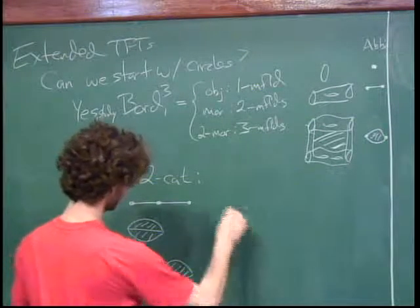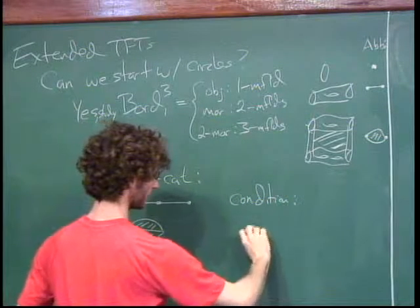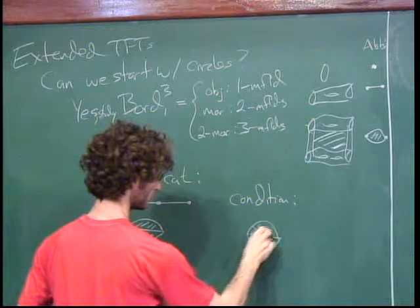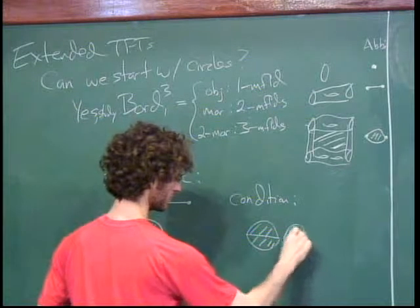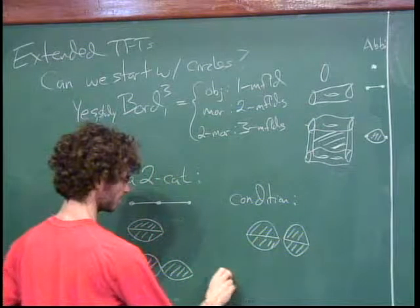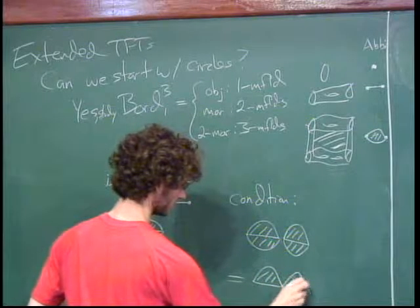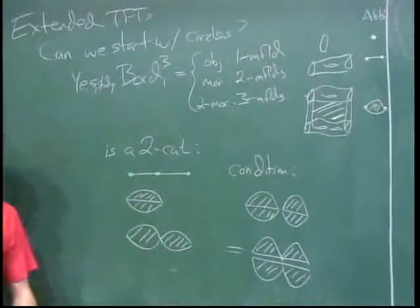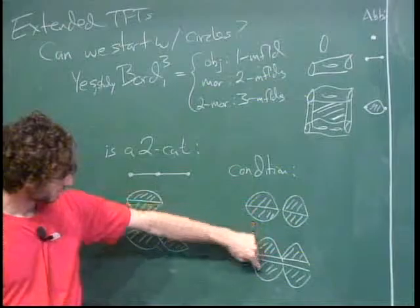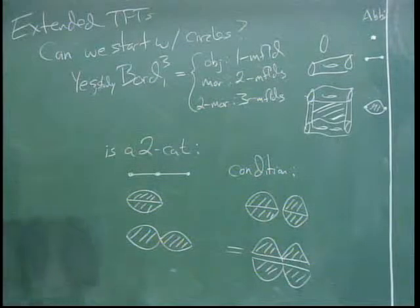There is a condition: if I first glue 2-morphisms vertically and then glue those to the vertical gluing of two other 2-morphisms, that's the same as gluing horizontally and then vertically. So the corresponding compositions are equal — that's the basic interchange condition for this to be a 2-category.